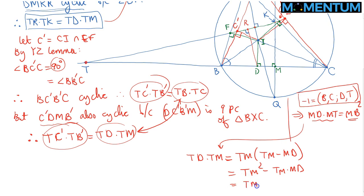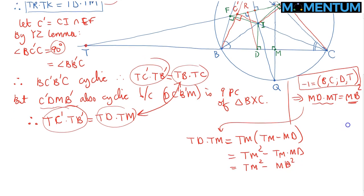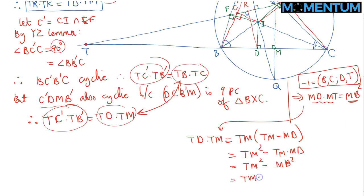So therefore, I can rewrite this as TM squared minus MB squared, and now difference of squares should give us TM minus MB times TM plus MB. And that should be sufficient. TM plus MB, but MB equals MC, so TM plus MC is just TC. And TM minus MB is just TB.